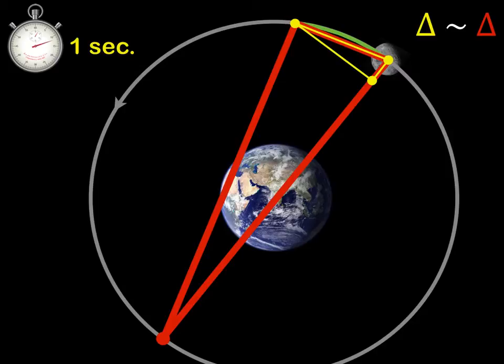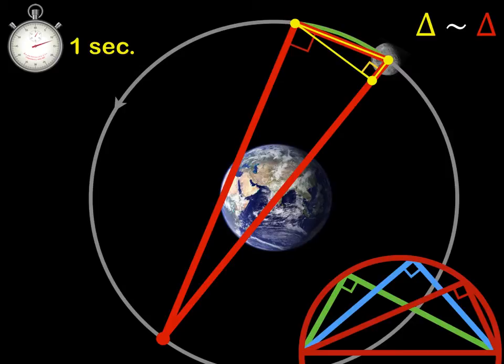You will recall Thales theorem which we have discussed previously, which ensures that this angle here in the red triangle is going to be a right angle because I use the diameter of the orbit as one of the sides. And by construction you also have a right angle here in the yellow triangle because that's how we decomposed the green into these perpendicular pieces.